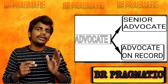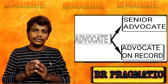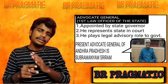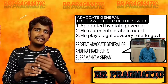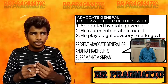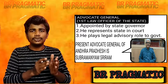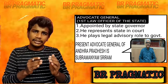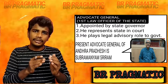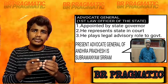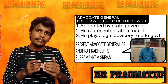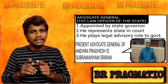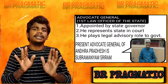So that was the difference between Advocate, Senior Advocate, and Advocate on Record. Now we will discuss Advocate General. Every state's Governor appoints an Advocate General for their state. If the state government needs representation in court in any matter, the Advocate General's job is to represent the state government in court. They are called the first law officer of the state and also serve as legal advisor to the state government.